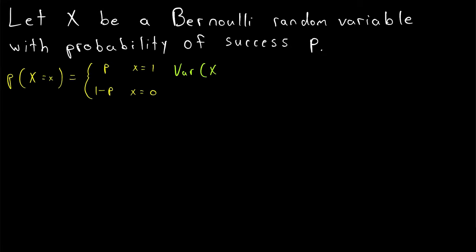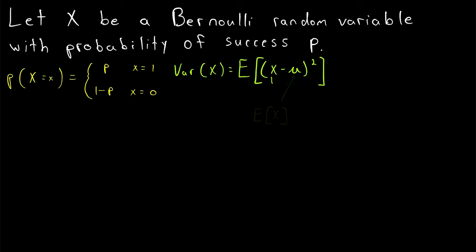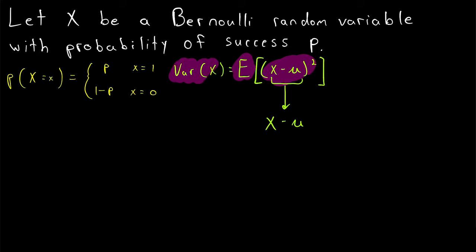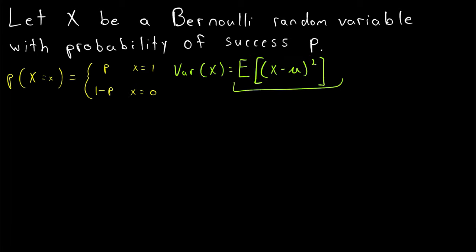Remember that the variance of a discrete random variable is equal to the expected value of the squared deviation from the mean of the random variable. Mu is the mean, or average, or expected value of x. So x minus mu is just another random variable — it's a measure of how much x deviates from its mean. We square that to get a positive measure of deviation, and the expected value of that squared deviation is the variance.